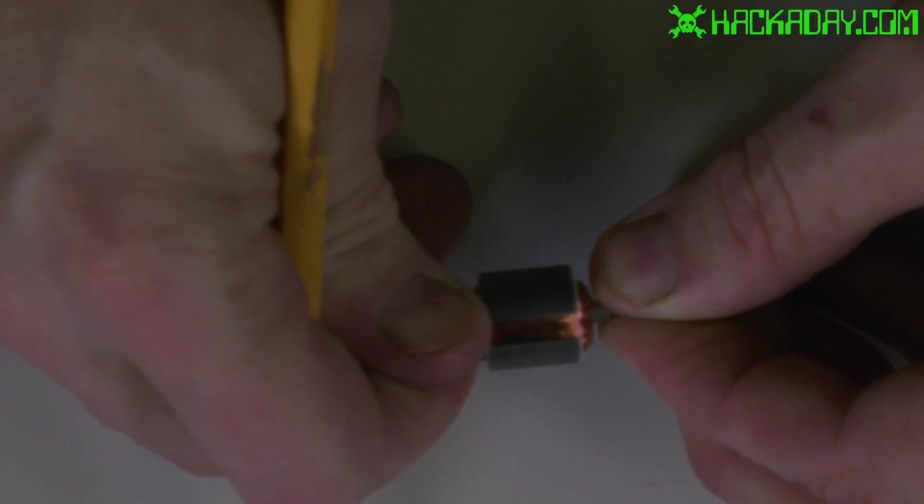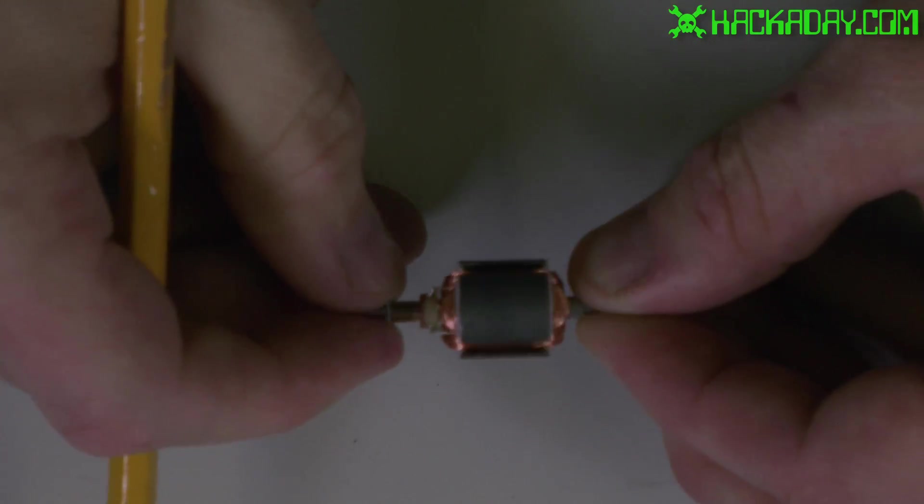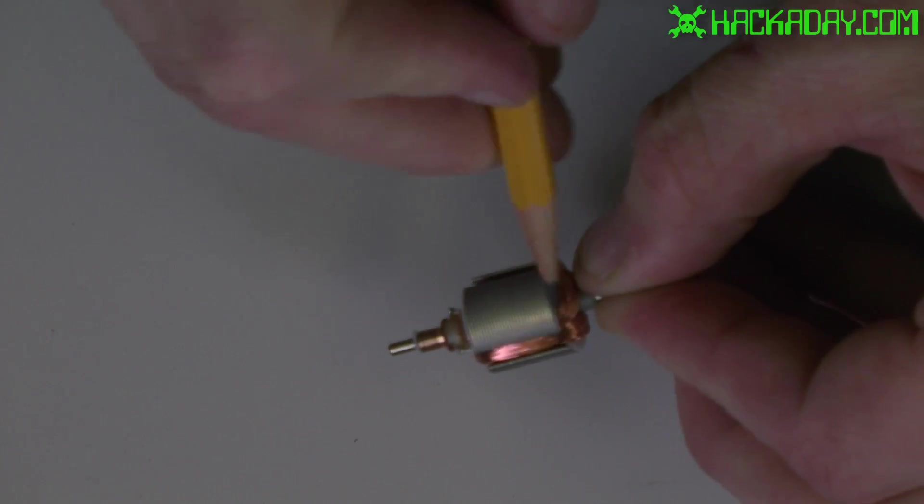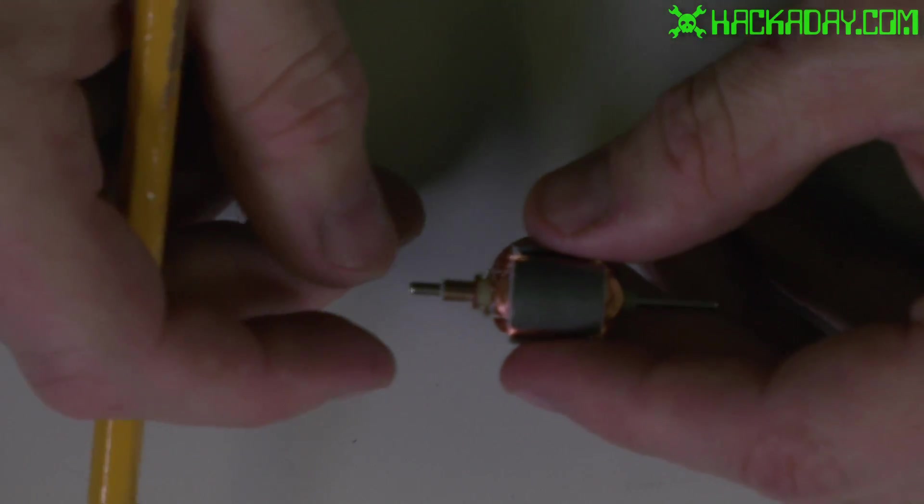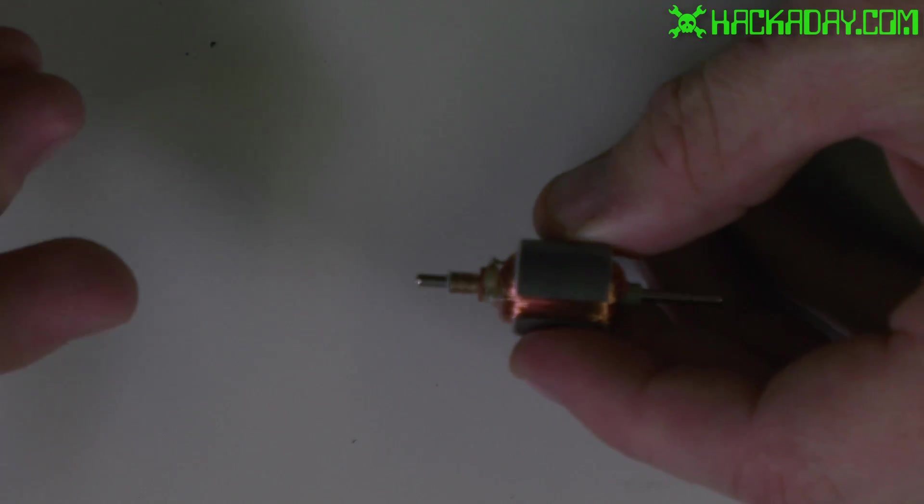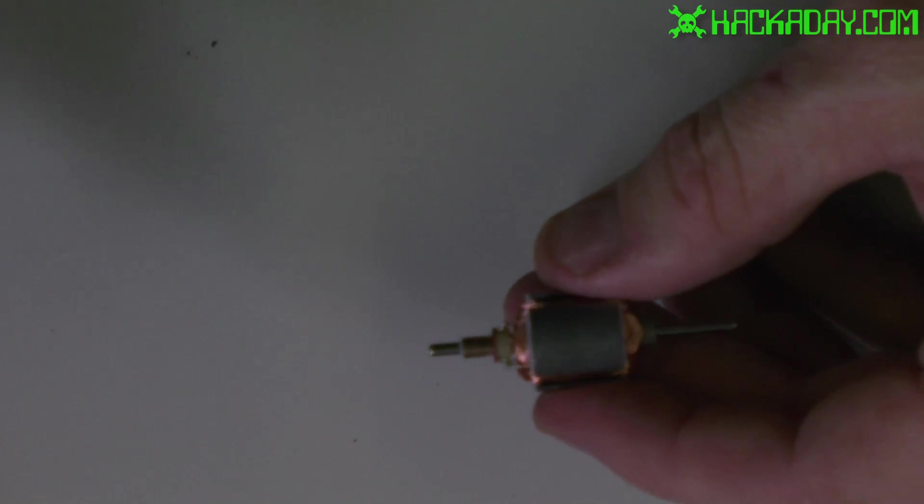One that has its armature skewed doesn't have that same effect but it's apparently more expensive to build it that way otherwise these cheap ones would have skewed ones.